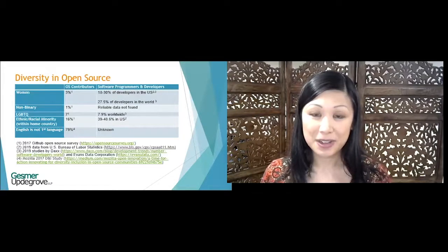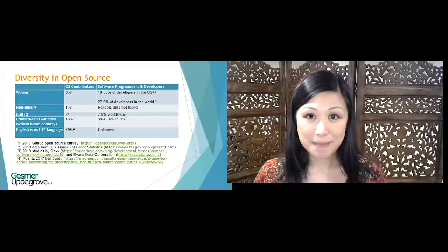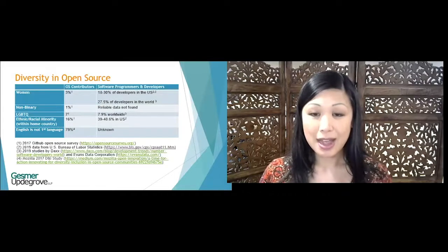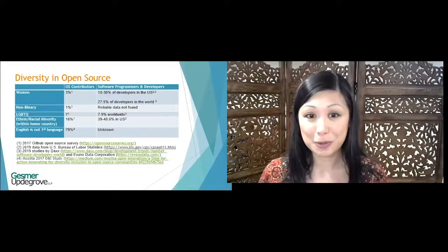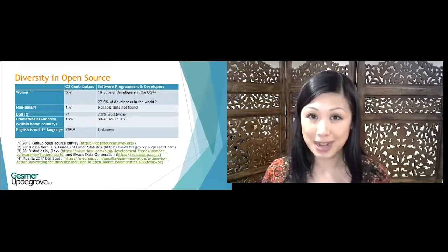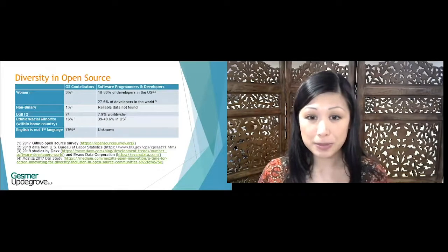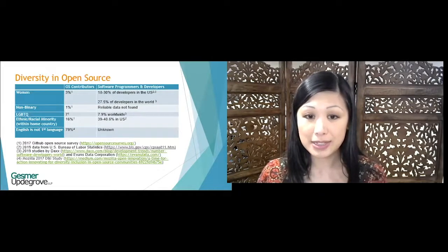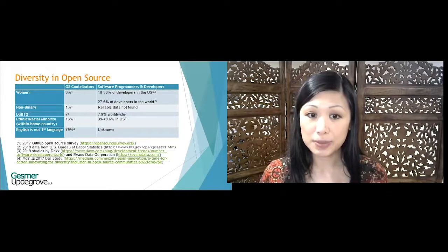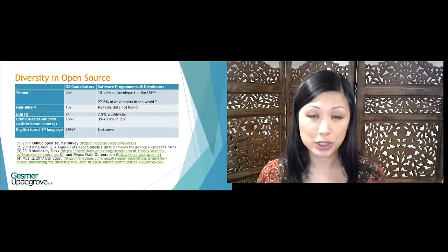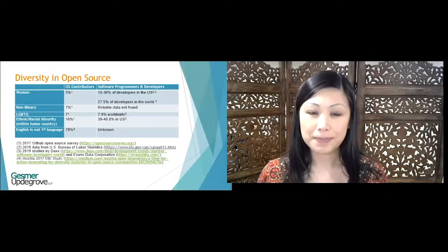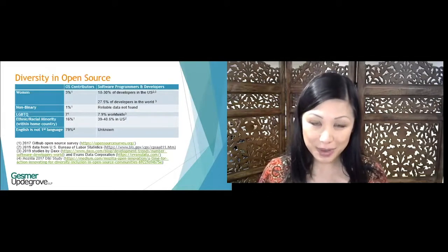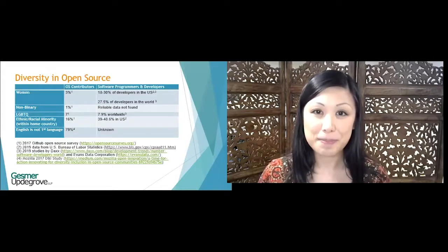There are several underrepresented groups in open source, most notably women. Although 18 to 30% of developers in the US and 27.5% of developers in the world are women, only 3% of open source contributors are women. And although 39 to 48.6% of developers in the US belong to ethnic or racial minority groups, only 16% of open source contributors do. Also note that 79% of open source contributors do not speak English as their first language, even though English is a primary language of many open source communities.